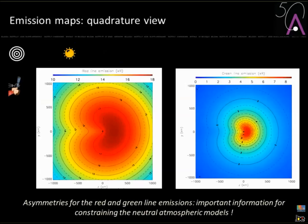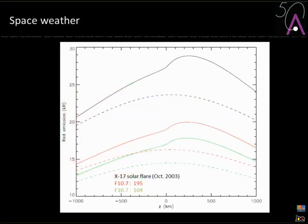With the 2D model you can produce emission maps. Placing yourself in the equatorial plane — sun on one side, comet in the center, observer looking from the side — you see a clear asymmetry between red and green line emission, due to solar UV absorption in the coma. This could provide very interesting information about neutral atmospheric models. The same space weather effects apply: increasing solar UV flux increases both red and green emission.